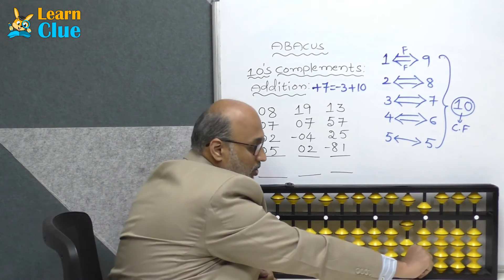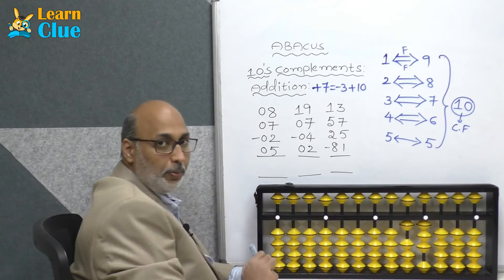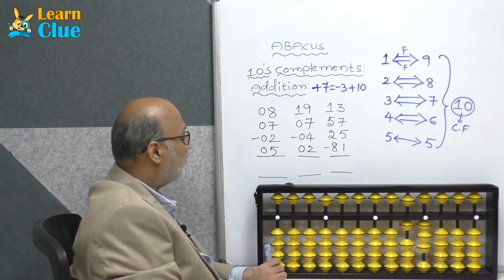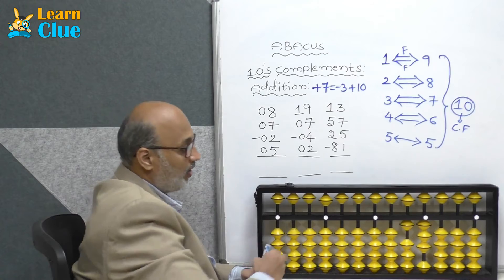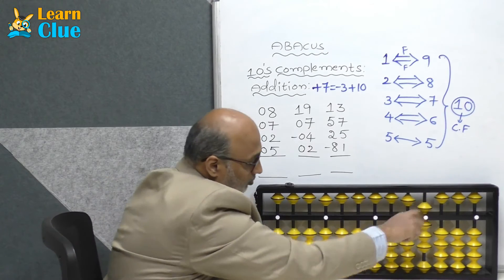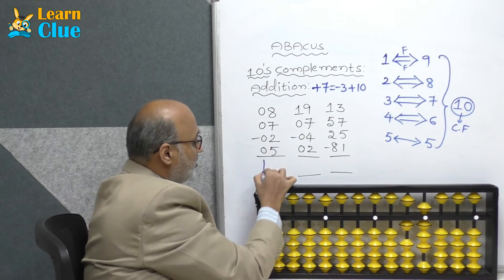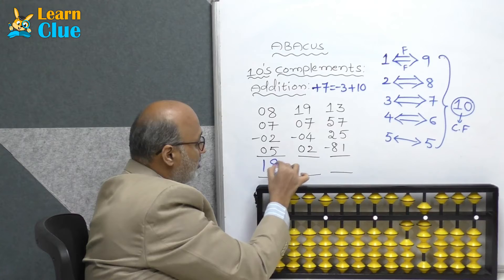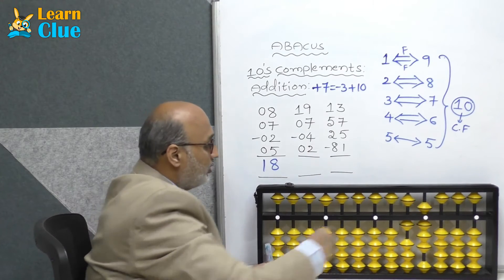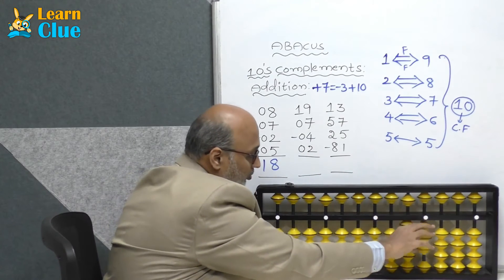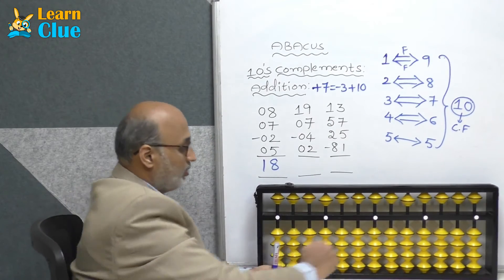Minus 2 technique is nothing but plus 3 minus 5. Now they are asking plus 5, which is direct. What is the answer? Answer is 18. Let's do the next problem: 19.